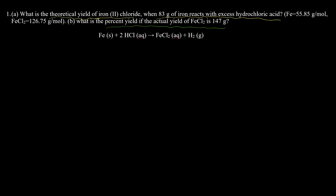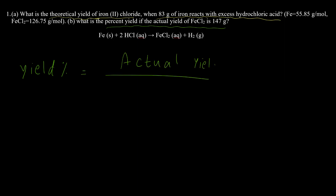Here is the formula for percent yield: yield percentage is equal to actual yield over theoretical yield, times 100.